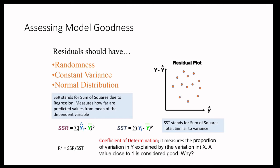One can also assess model goodness using the coefficient of determination, R-squared. It is defined as the ratio of SSR (sum of squares of regression) to SST (sum of squares of totals). Generally, a value of R-squared close to 1 is considered a good value.